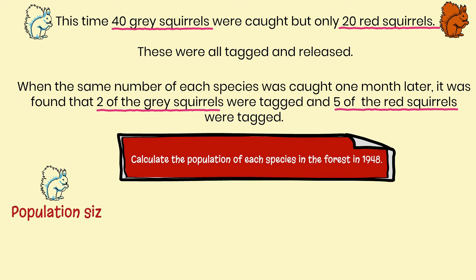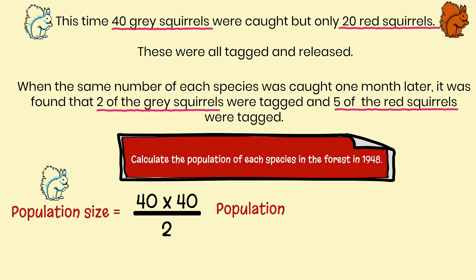Let's start with the grey squirrels. The population size is determined by multiplying the 40 caught on the first time by the 40 caught on the second time, then dividing by those two squirrels that had the tag or mark on them. So 40 × 40 ÷ 2 — the population of grey squirrels in 1948 was 800.